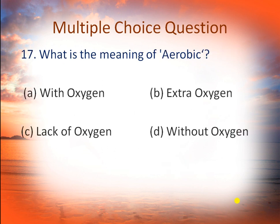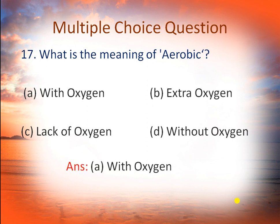Question number 17: what is the meaning of aerobic? Option A: with oxygen, B: extra oxygen, C: lack of oxygen, and D: without oxygen. We have two kinds of activities when we do physical exercises — aerobic and anaerobic. Aerobic is the activity which we do in the presence of oxygen. So option A is right — with oxygen.